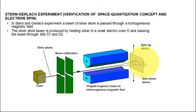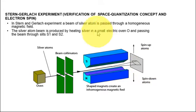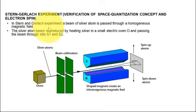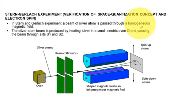On the photographic plate, silver atoms form an image which we will discuss later. In the Stern-Gerlach experiment, a beam of silver atoms is passed through an inhomogeneous magnetic field — note that it is inhomogeneous, not homogeneous.